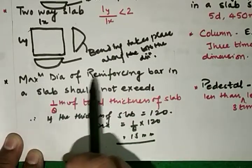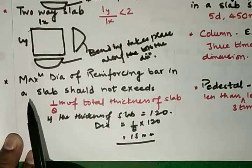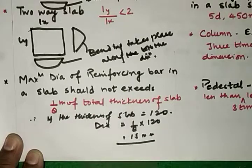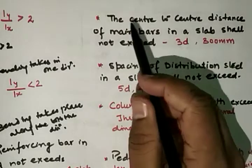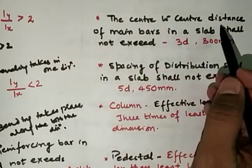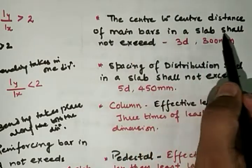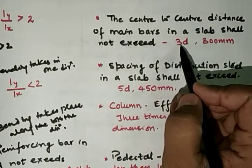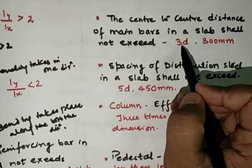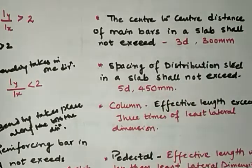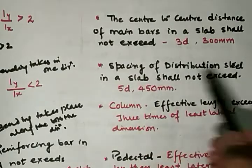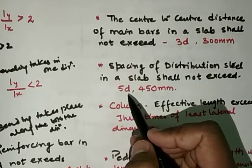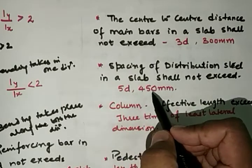To restate: the maximum diameter of a reinforcing bar in a slab should not exceed 1/8th of the total thickness of the slab. Next, the center-to-center distance of main bars in a slab shall not exceed 3d — that is, 3 times the effective depth of the slab — or 300 mm, whichever is less. The spacing of distribution steel in a slab shall not exceed 5d, that is 5 times the effective depth, or 450 mm.